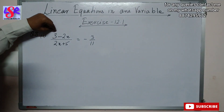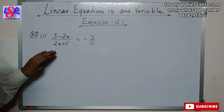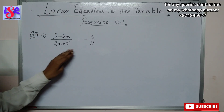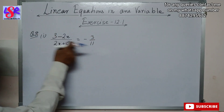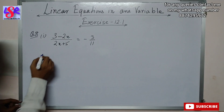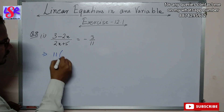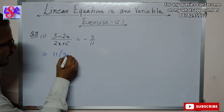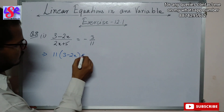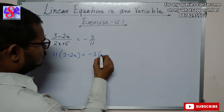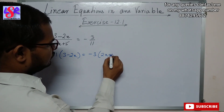In this one we are having (3 - 2x) / (2x + 5) = -3/11. Now we can do the cross multiplication, and this can be written as 11 × (3 - 2x) = -3 × (2x + 5).